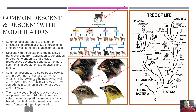Looking at the tree of life, all these different species and organisms are connected to a common ancestor at the very bottom, showing that on some basic level we all share something in common in our DNA. The many types of biodiversity on our planet can be attributed to natural selection and adaptations made by organisms based upon their environment over many years from generation to generation.